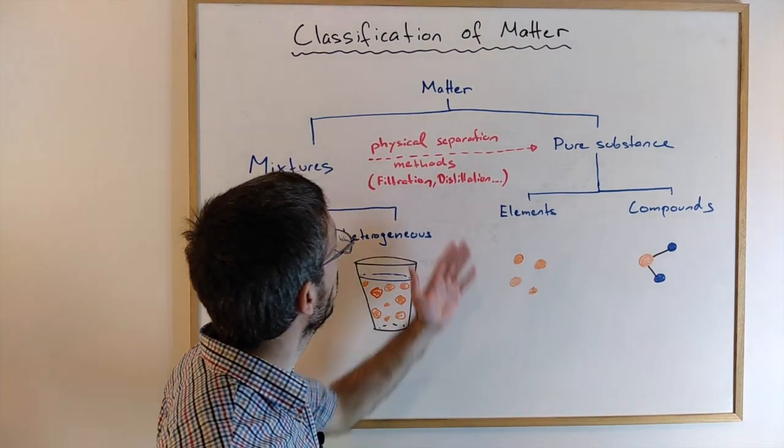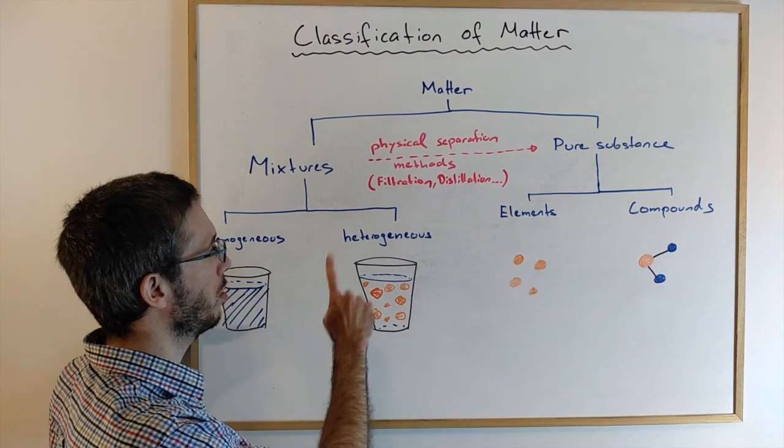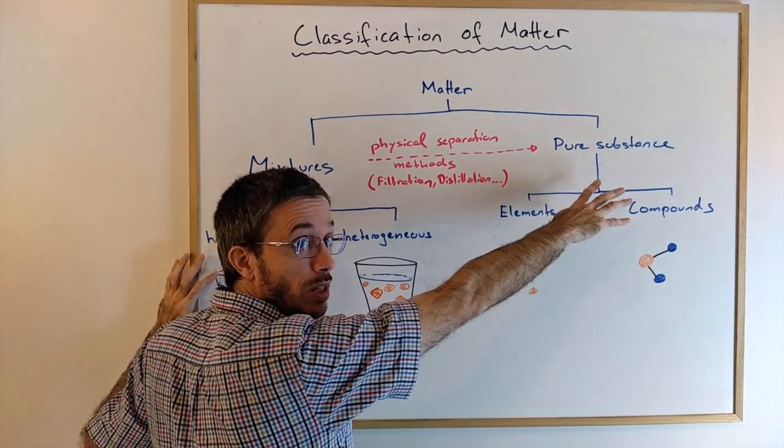So that's the main overview. You have matter, either it's a pure substance or a mixture. You have the homogeneous mixtures, you have the heterogeneous mixtures, and you have the elements and the compounds which are pure substances.